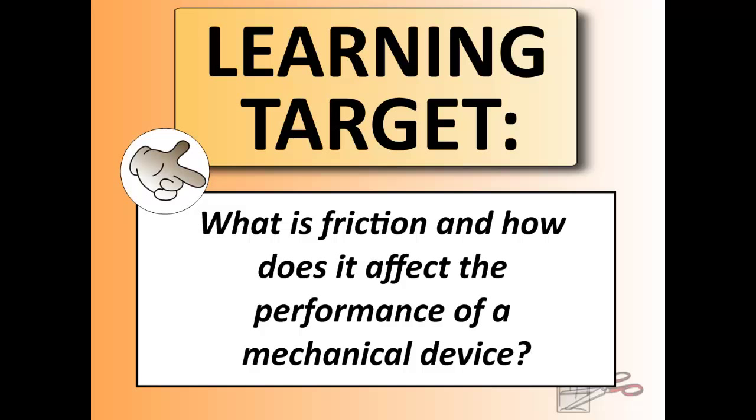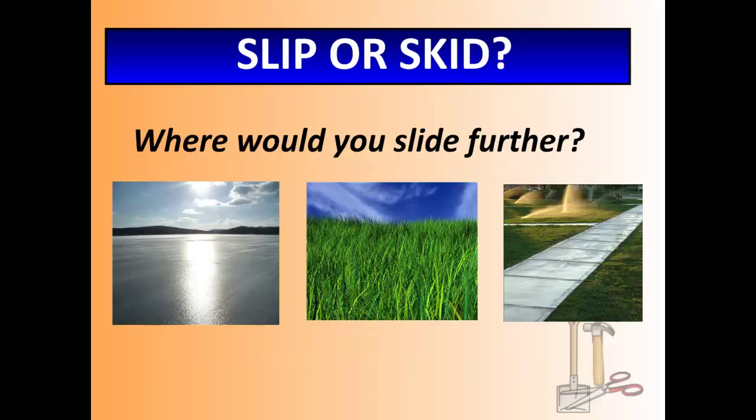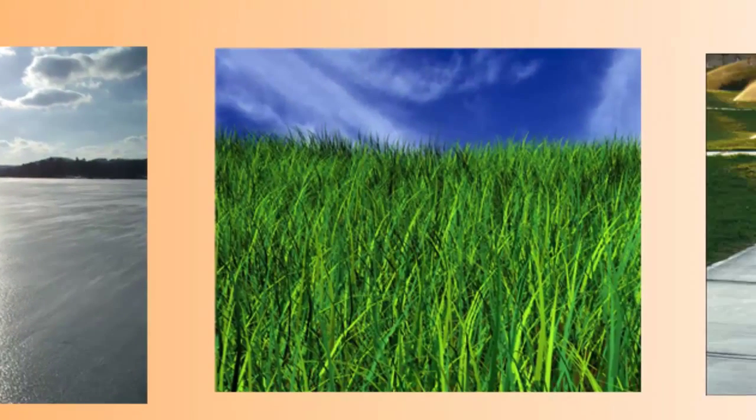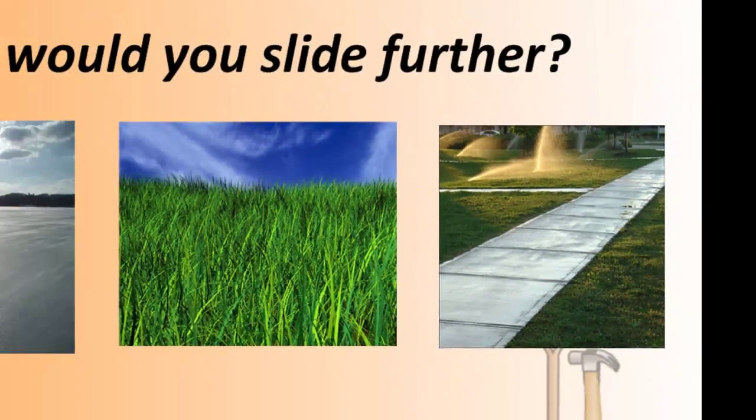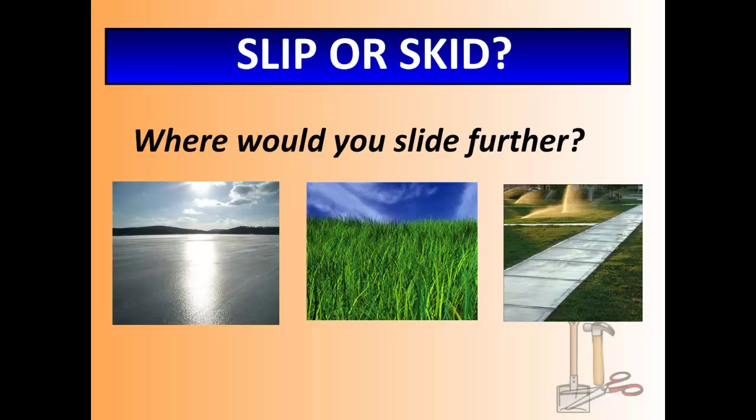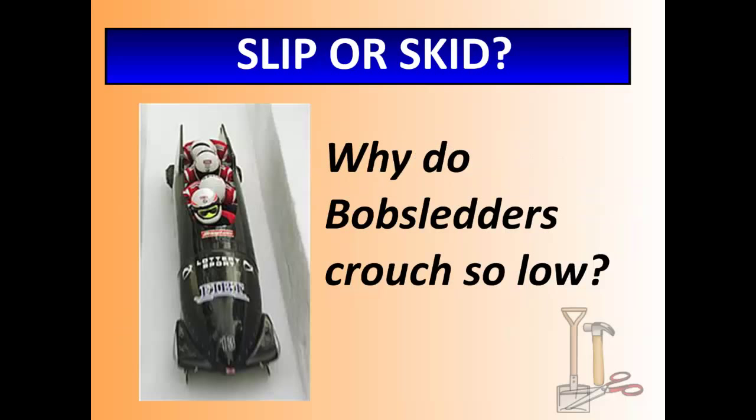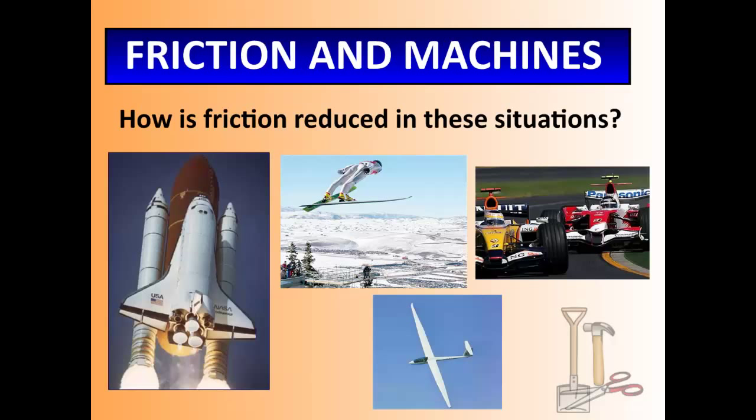Let's start right away with three images here and a simple question. Where would you slide further? On the sheet of ice on the left, in this field of grass in the middle, or on the wet pavement on the right? Another question for you: why do bobsledders crouch so low? How is friction reduced in these situations?